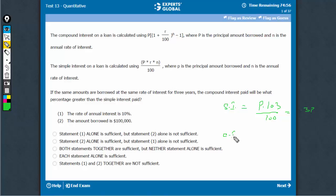Compound interest would be 1 plus 10 upon 100 raised to power 3 because the duration is given as 3 years already. This would be 1.1 cube, which is 1.331P.